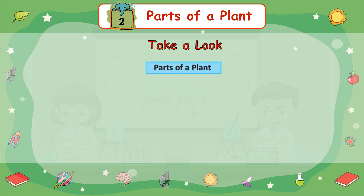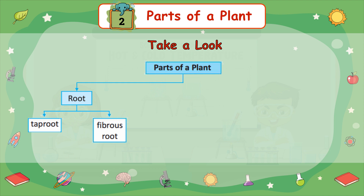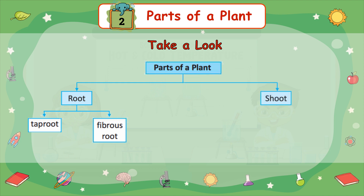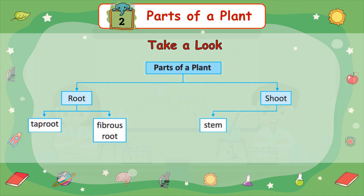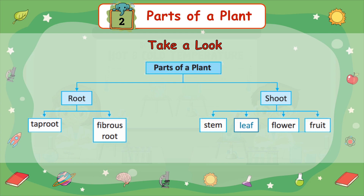Take a look at the parts of a plant: root — taproot and fibrous root; shoot — stem, leaf, flower, and fruit.